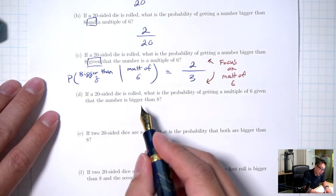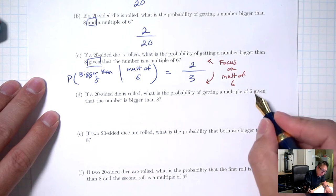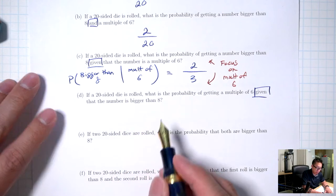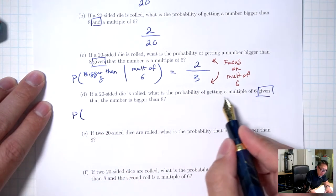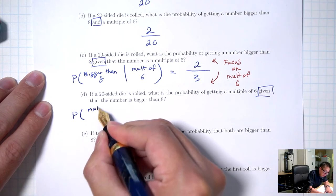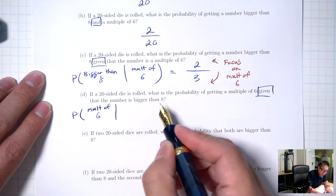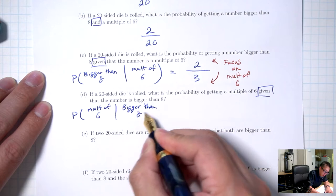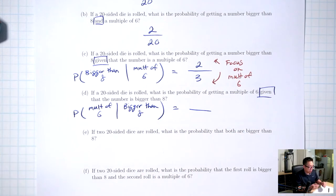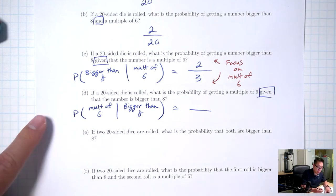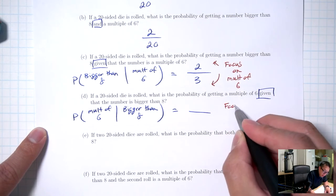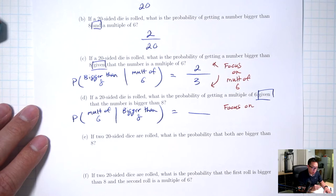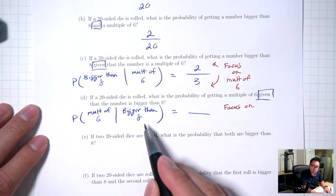Part D: if a 20-sided die is rolled, what's the probability of getting a multiple of 6 given that the number is bigger than 8? I see the word 'given,' so this is conditional probability. In symbols: P(multiple of 6 | bigger than 8). Because it's conditional probability, I should be focusing on the given part, which is the second part — numbers bigger than 8.